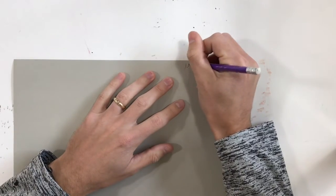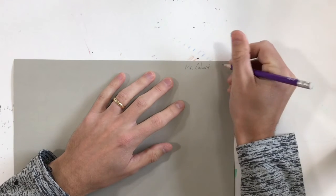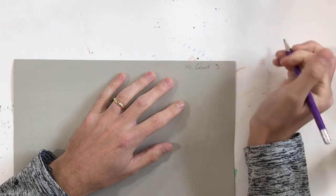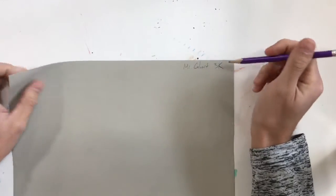I'm going to put my name on the back, Mr. Calvert. Make sure to put your class code too. So if you're in Ms. Kelleher's class, you might put a 3K. I'm putting it up in the corner.